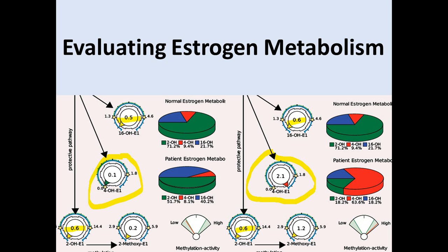The last piece to look at with estrogen metabolism is methylation. We can look at the relative conversion of hydroxy to methoxy. On the left you've only got 0.2 for the methoxy; on the right you've got 1.2. So there's a lot more conversion going on on the right — that's your methylation activity, which is high, whereas on the left it's low. This is important, because if you make 4-hydroxyestrogens, we really want it methylated — otherwise it's free to make quinone.